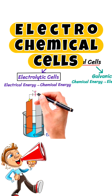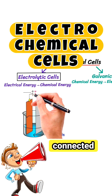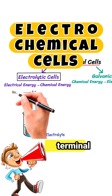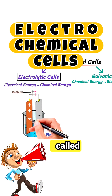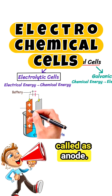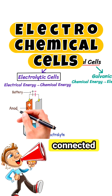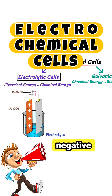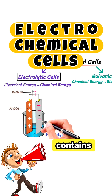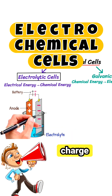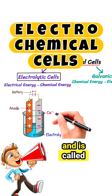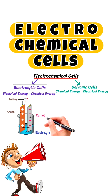The electrode connected to the positive terminal contains positive charge, called the anode. On the other hand, the electrode connected to the negative terminal contains negative charge and is called cathode.